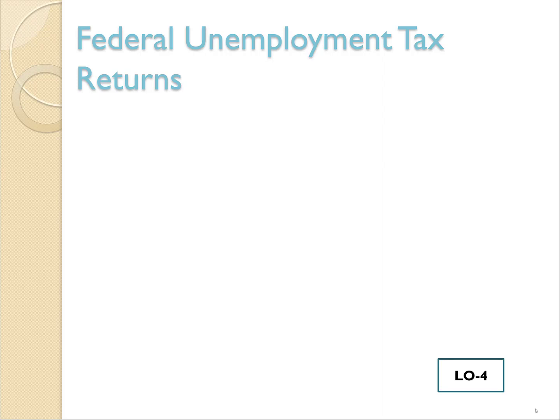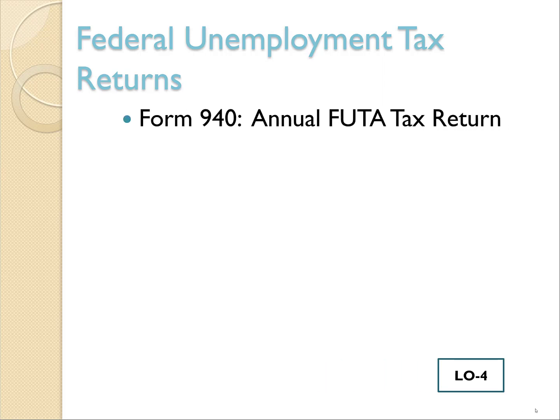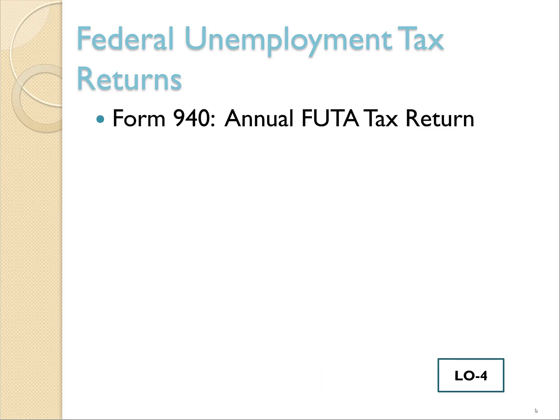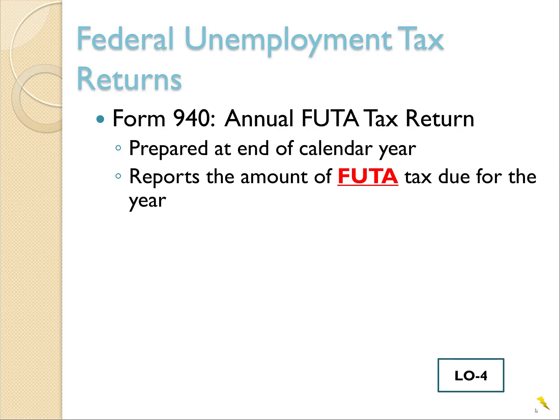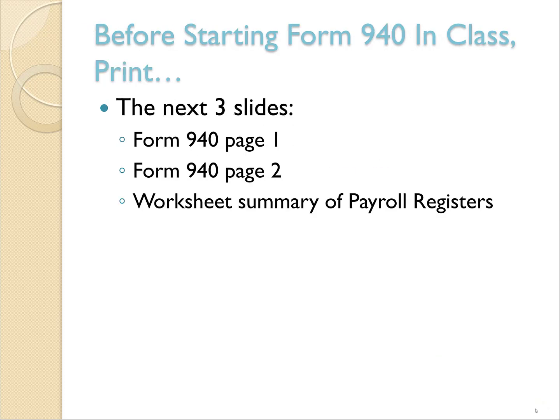Now we're going to talk about federal unemployment tax returns. The form to calculate your annual FUTA tax is called Form 940, Annual FUTA Tax Return. Because it says annual, that means we're going to do this form once a year. It's prepared at the end of the calendar year and it's going to report the amounts of FUTA tax that you need to pay for the year.